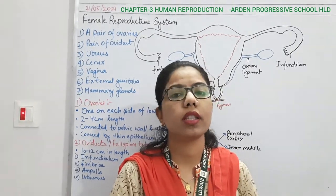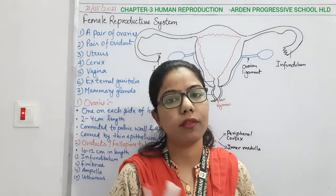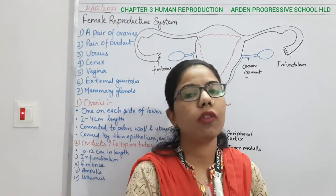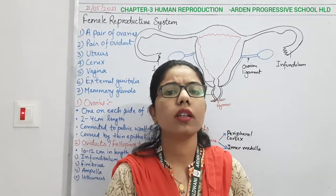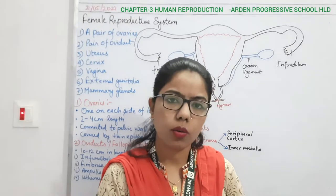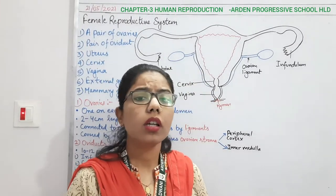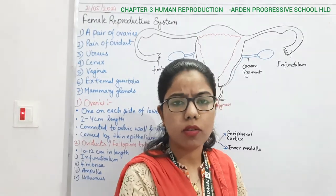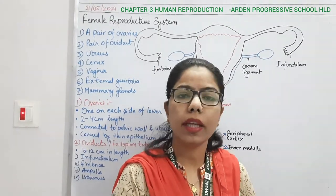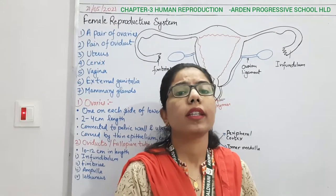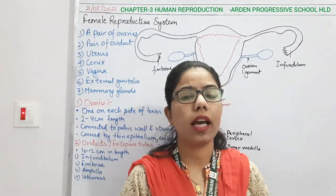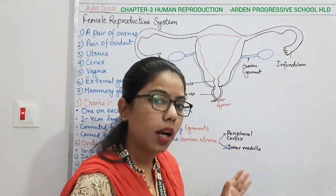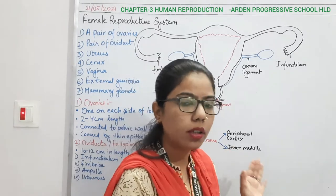To produce or for the formation of these gametes there is a process known as gametogenesis. When gametogenesis occurs, then only fertilization will take place. So we can say this is a pre-fertilization event, as we have done in the case of flowering plants. Here we are going to study the structure of the gamete and how it forms in case of the male reproductive system.